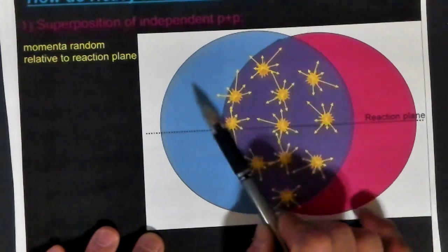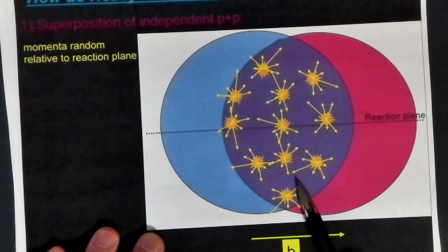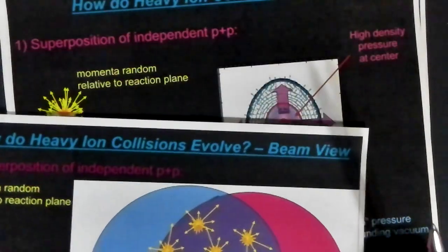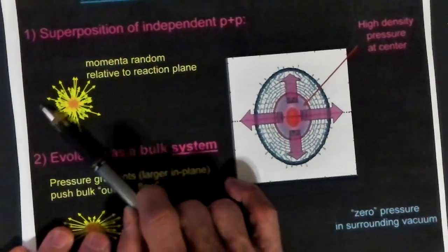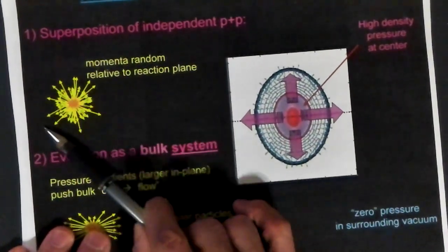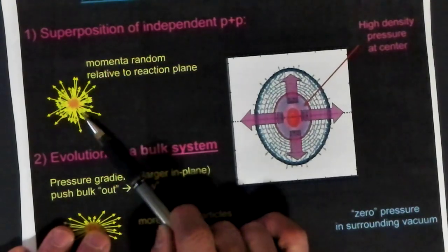If all of these collisions are independent of each other and things are not getting in the way and they're not talking to each other, then when you look at the heavy ion collision, you see just a bunch of these independent particle-particle collisions added up together and you'll get something isotropic.